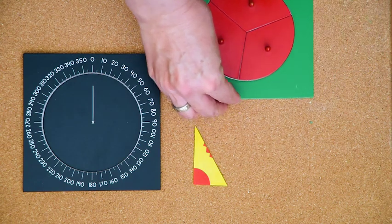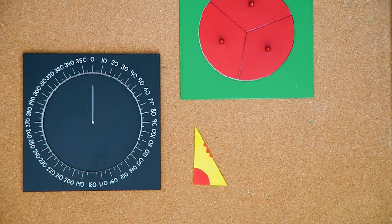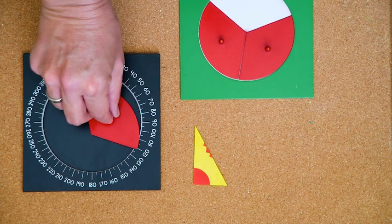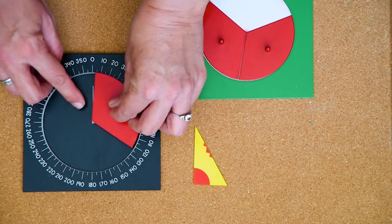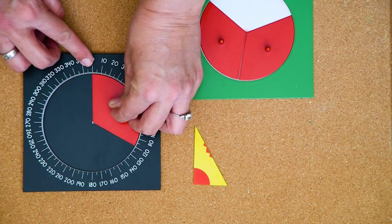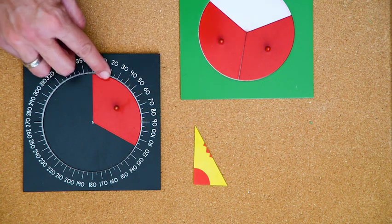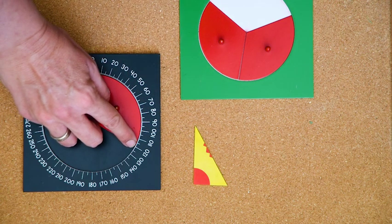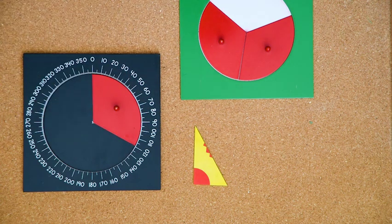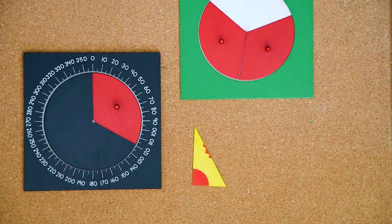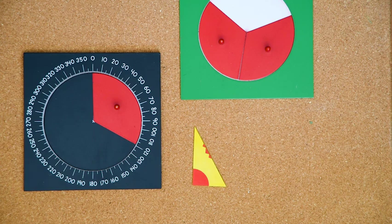I wonder how many degrees 1 third is. We are going to line up the vertex on the x and this angle on the zero. We can see that 1 third is 120 degrees. Is it bigger or smaller than 90 degrees?